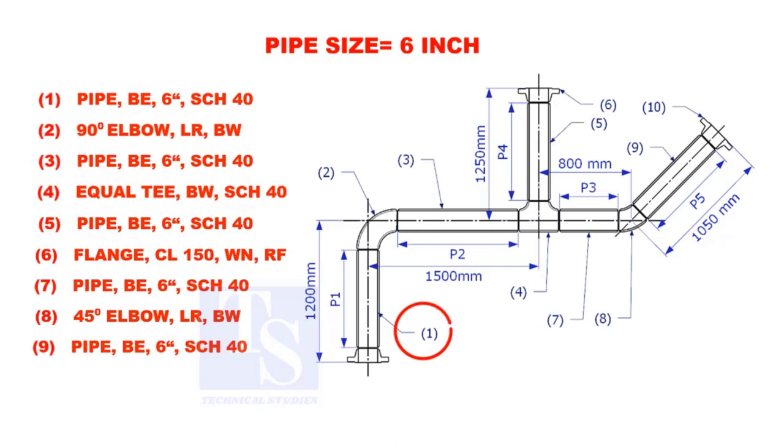Let us calculate the length of pipe 1. To calculate the length of pipe 1, we need to reduce the flange height and the elbow center from the measurement 1200mm.